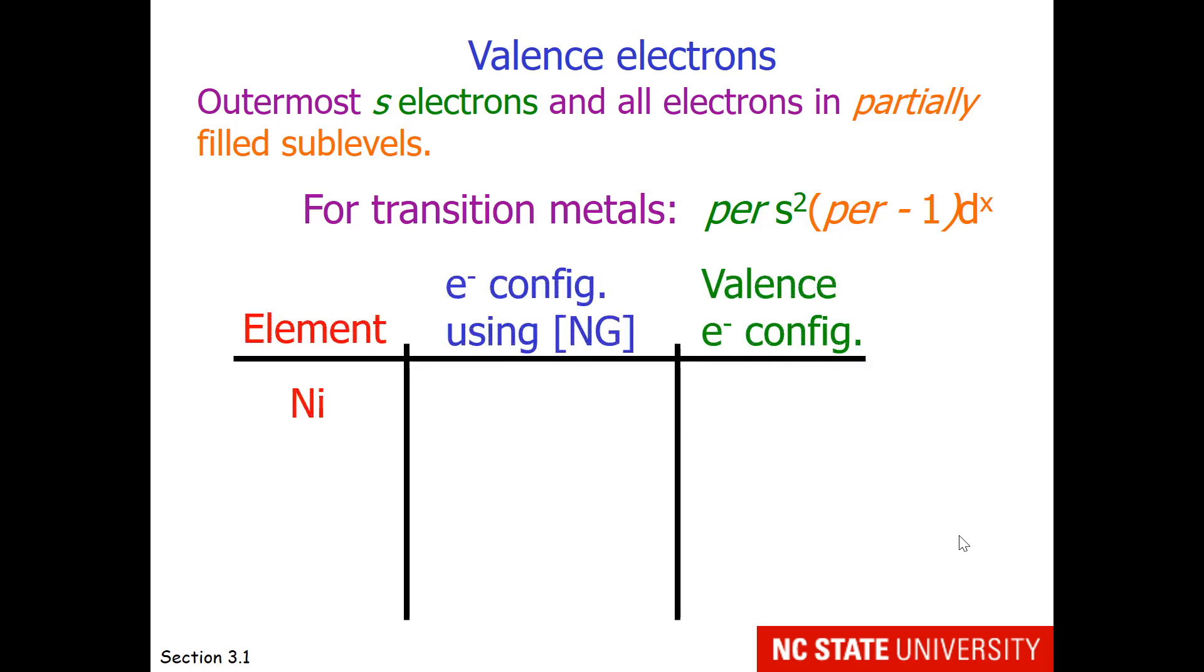Here are some examples. Let's look at nickel. The full electron configuration is argon, 4s2, 3d8. The valence electron configuration, we lose the argon, and we just go with 4s2, 3d8. How about niobium? Once again, we are using the outermost s and any partially filled sublevels. So that is 5s2, 4d3. How about zinc? The full electron configuration is shown, and you notice that we drop the argon, and also the 3d10 electrons, because that sublevel is full, for a valence electron configuration of 4s2.